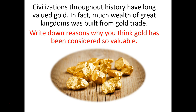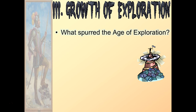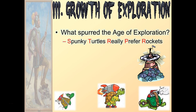What spurred this age of exploration? I'm going to teach you an acronym to help you remember some of the causes: 'Spunky Turtles Really Prefer Rockets.' The first letter in each of those words is going to help you remember the causes for the age of exploration. The S is Spices — think of things like sugar and precious goods that would motivate people to want to explore. The T is Technology — even if you had the desire, if you do not have the means to explore, you can't explore. It would take new inventions and better maps to open up the doors for exploration.